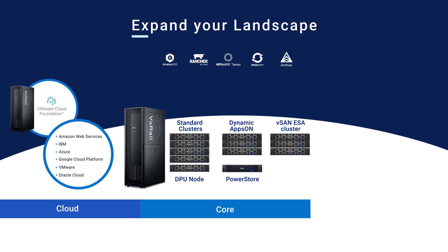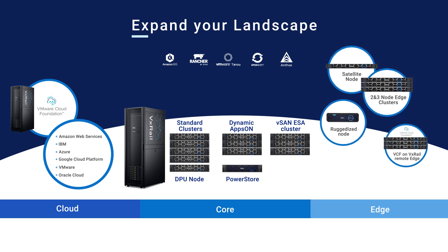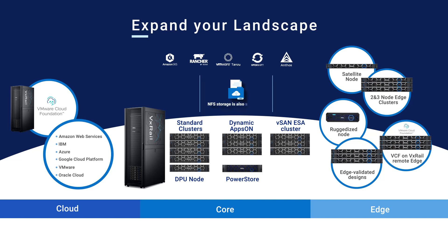Out at the edge, customers can deploy single unclustered satellite nodes to areas where space is most limited. There are also two-node and three-node edge deployment options to provide clustered resources at edge sites where there is more space. Some edge sites can operate in pretty extreme conditions, like an Arctic research station, a military base in the desert, or on an ocean oil rig.